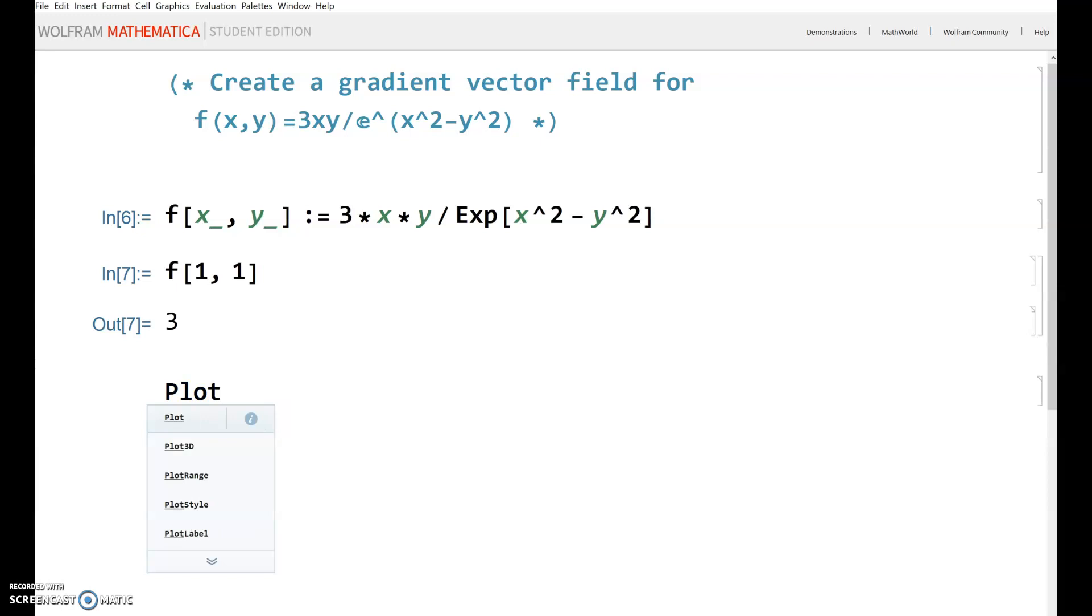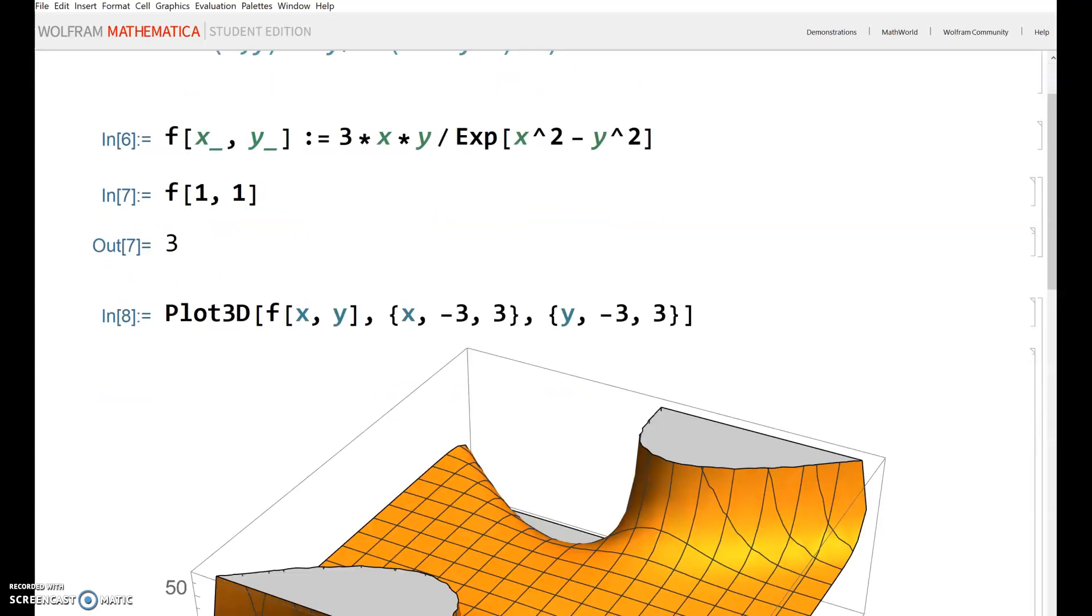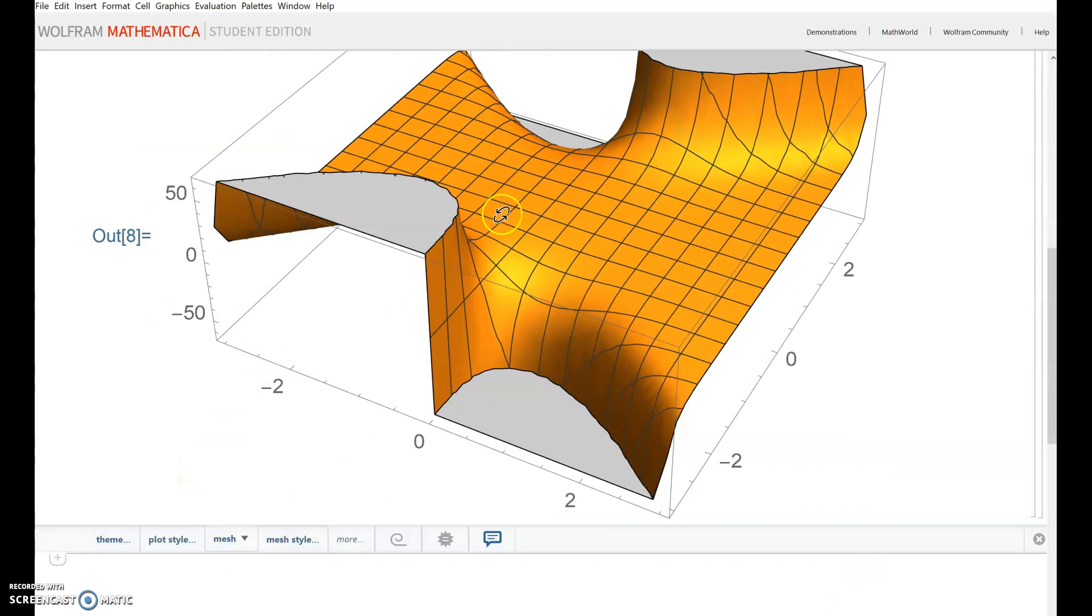Let's plot this to get a sense of what it looks like. I'll use the Plot3D command from -3 to 3. I can adjust that later if needed. The plot shows a flat area in the middle, and then it rises very quickly in this direction, and decreases very quickly there and over there.